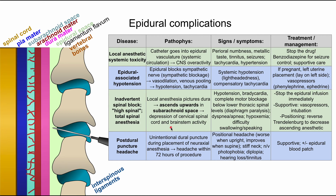Signs and symptoms of high spinal include hypotension, bradycardia, and complete motor blockage below the lower thoracic spinal levels. Diaphragm paralysis can occur, resulting in dyspnea or apnea, as well as hypoxemia and difficulty speaking and swallowing — essentially temporarily paralyzing the patient so they cannot breathe.